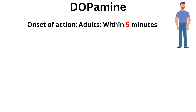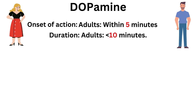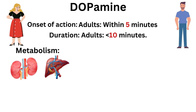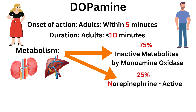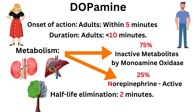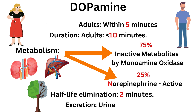Onset of action in adults: within 5 minutes. Duration in adults: less than 10 minutes. Metabolism: renal and hepatic — 75% to inactive metabolites by monoamine oxidase, and 25% to norepinephrine. Half-life elimination: 2 minutes. Excretion: through urine.